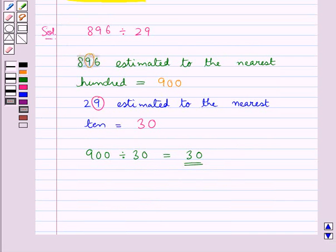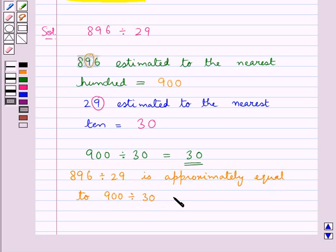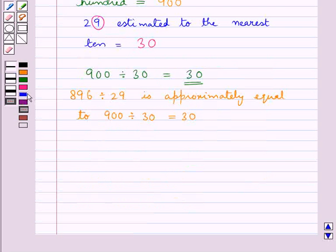That is, we say 896 divided by 29 is approximately equal to 900 divided by 30 which is equal to 30. So, the estimated quotient is equal to 30.